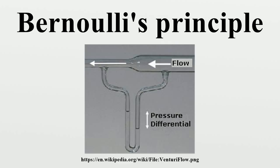In aerodynamics, L.J. Clancy writes: to distinguish it from the total and dynamic pressures, the actual pressure of the fluid, which is associated not with its motion but with its state, is often referred to as the static pressure; but where the term pressure alone is used it refers to this static pressure. The simplified form of Bernoulli's equation can be summarized as: static pressure plus dynamic pressure equals total pressure. Every point in a steadily flowing fluid has its own unique static pressure P and dynamic pressure Q, and their sum P plus Q is defined to be the total pressure P0. The significance is that total pressure is constant along the streamline.